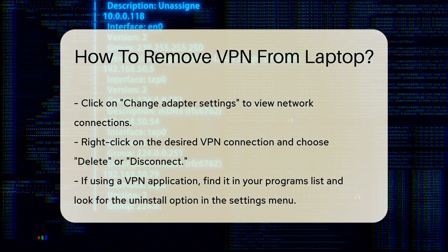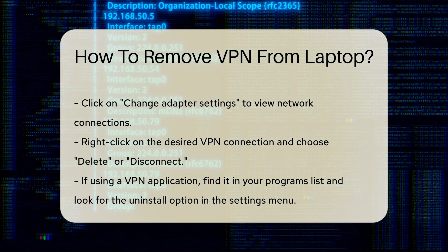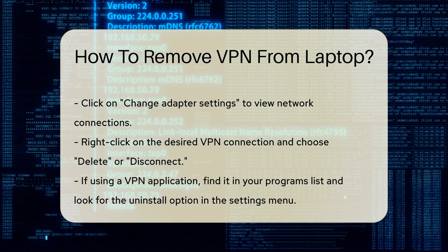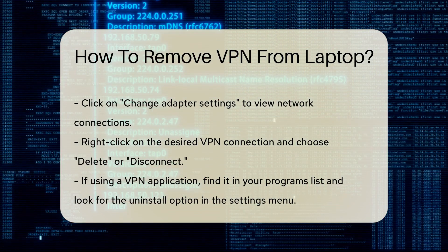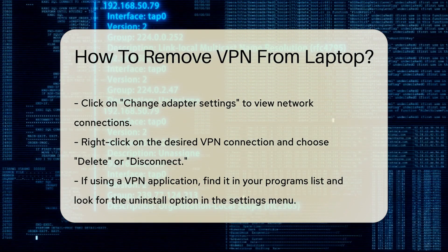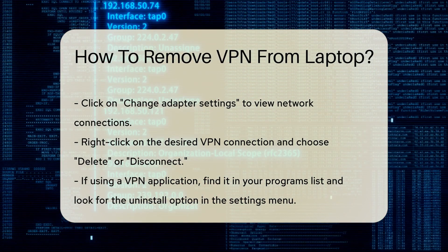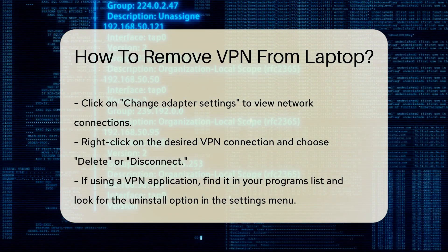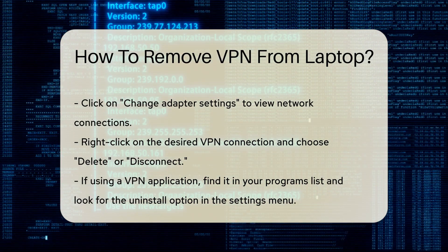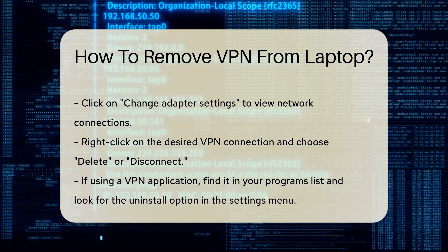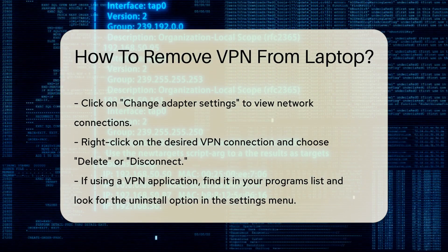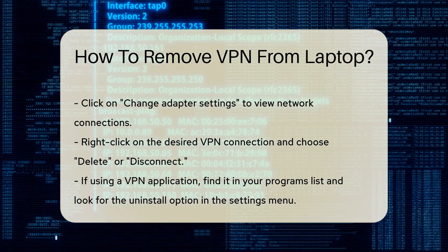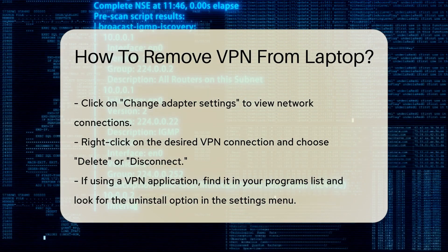If you are using a VPN application, locate the software in your programs list. Open the application and look for an option to uninstall. This is often found in the Settings or Preferences menu. Once located, follow the prompts to complete the uninstallation process.